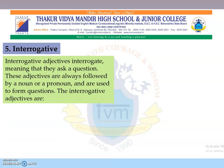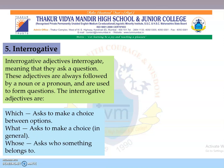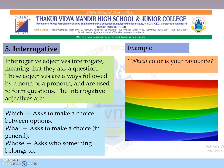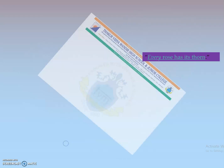Interrogative adjectives interrogate, meaning that they ask a question. These adjectives are always followed by a noun or a pronoun and are used to form questions. The interrogative adjectives are: 'which' — asked to make a choice between options; 'what' — asked to make a choice in general; 'whose' — asked who something belongs to. Example: which colour is your favourite? 'Which' would be your adjective.